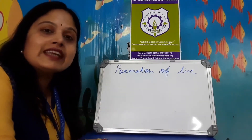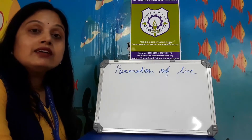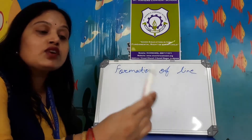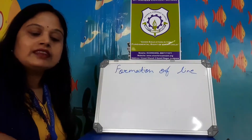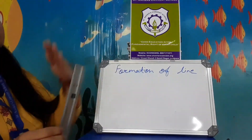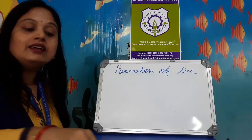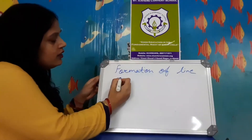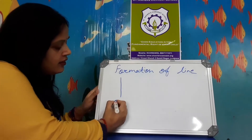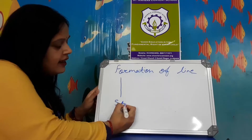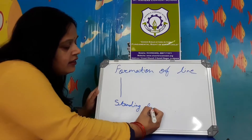The first line is the standing line. Stand — 'stand' means kharayona, straight. Like this — straight. Standing line. This is a standing line.